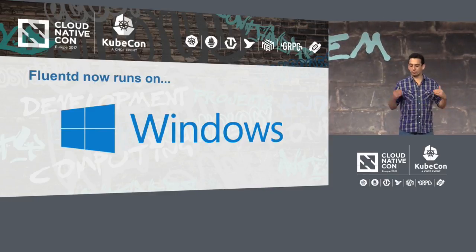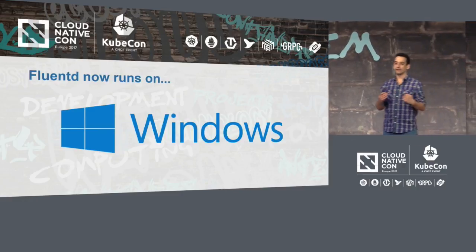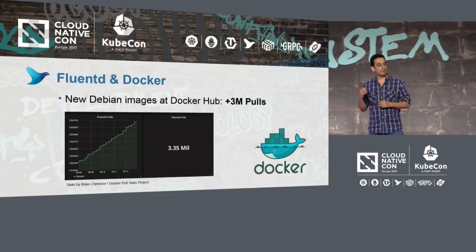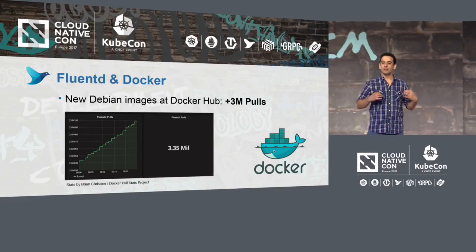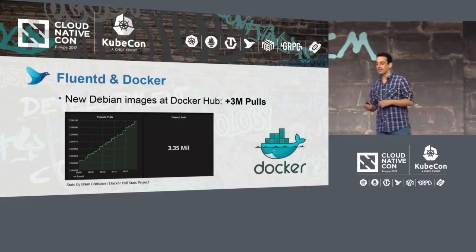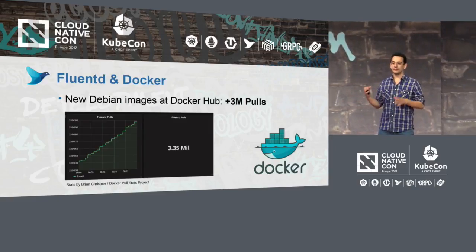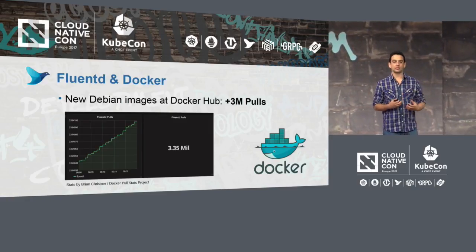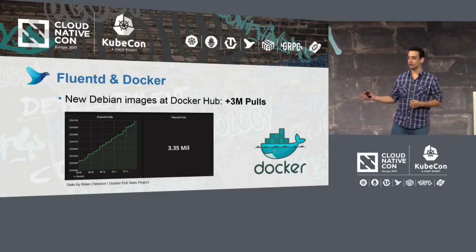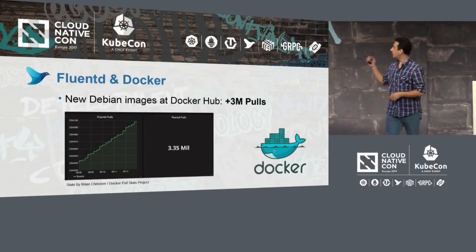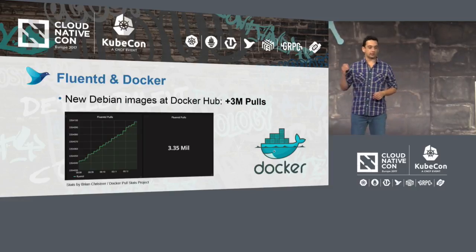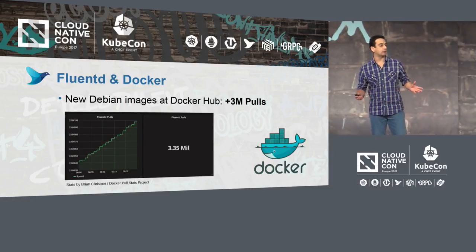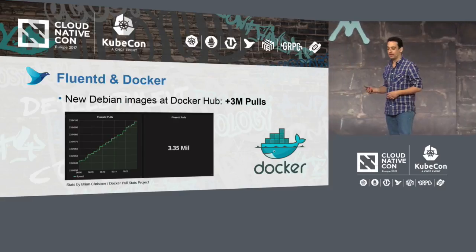We were on top of this, trying to see how we can scale — not just as a service, but also cross-platform. And if we talk about cross-platform, we need to talk about cross-system clusters. In terms of Docker, recently the team came up with new Docker images for FluentD. The latest Debian image has more than three million pulls, and this image is quite new — no more than two months old. So these are really, really good stats.